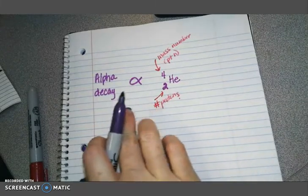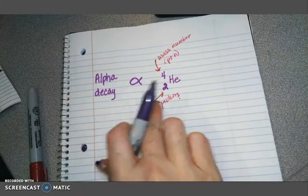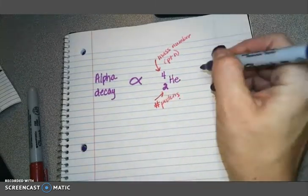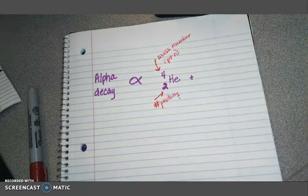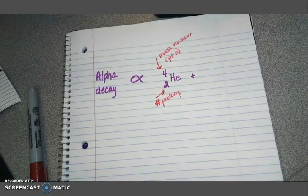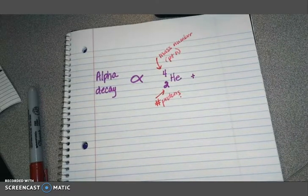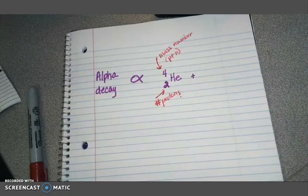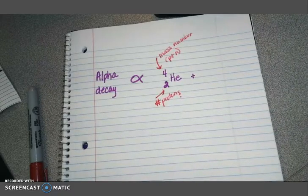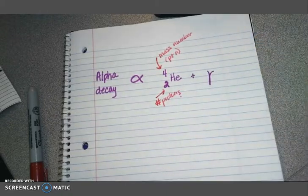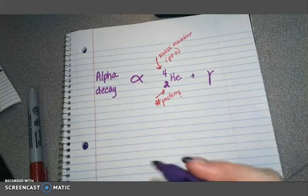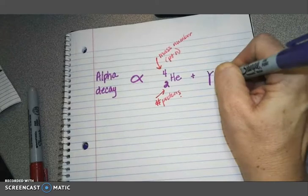So when something undergoes alpha decay, it's actually releasing a helium atom plus some gamma radiation. And this is our symbol for gamma radiation right here. I'm just going to put that in parentheses and it's gamma rays.